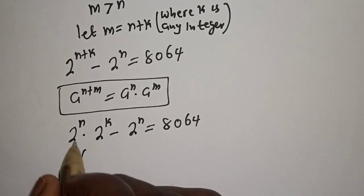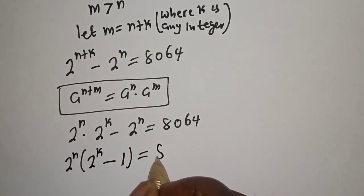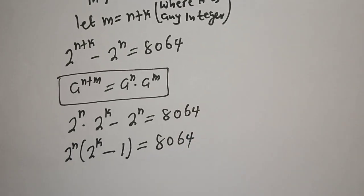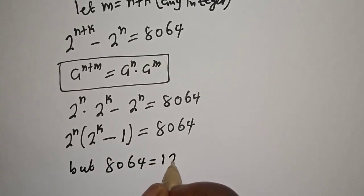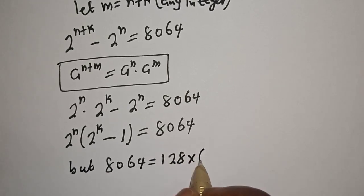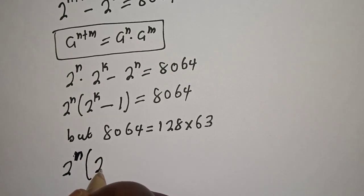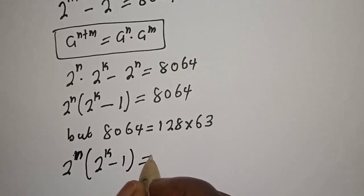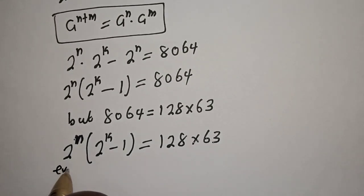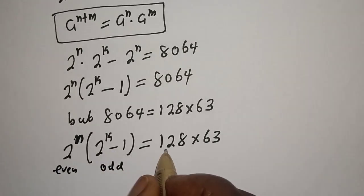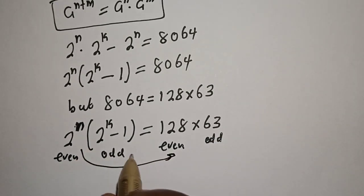Now, 2 raised to power n is common — let's factor it out. We get: 2 raised to power n times (2 raised to power k minus 1) equals 8064. Now 8064 is equal to 128 times 63. Substituting: 2 raised to power n times (2 raised to power k minus 1) equals 128 times 63. Notice that 128 is even and 63 is odd, so we can compare the even part to the even part and the odd part to the odd part.